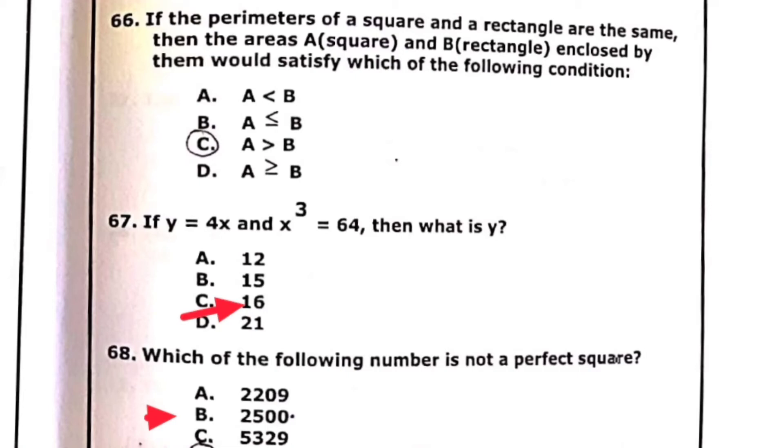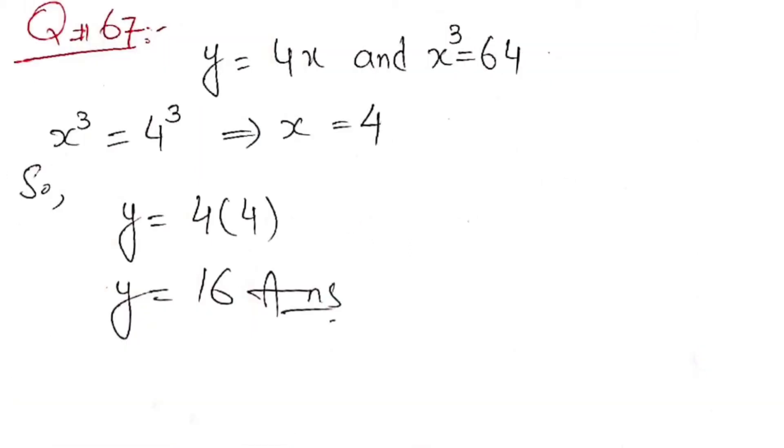Question 67: if Y equals 4x and x cubed equals 64, then what is the value of Y? 16 is the exact answer. 68: which of the following numbers is not a perfect square? Answer is 9410, option D. Now we check the solution of 67: if Y equals 4x and x cubed equals 64, then you first find the value of x. X equals 4, then Y is equal to 16.